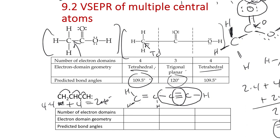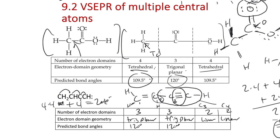Going through carbon one versus carbon two versus carbon three: for carbon one, we have three domains — a double bond is one domain, two single bonds are two more — so the geometry is trigonal planar with a predicted bond angle of 120 degrees. The second carbon also has three domains, so it's also trigonal planar. The last carbon has two domains, and C4 also has two domains — both are linear, with 180 degree bond angles.